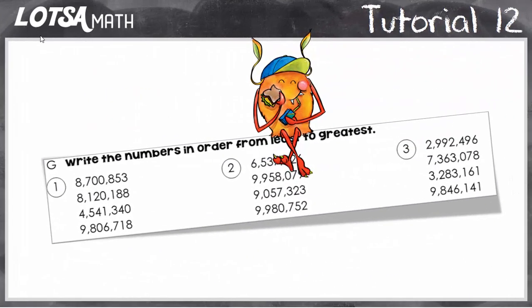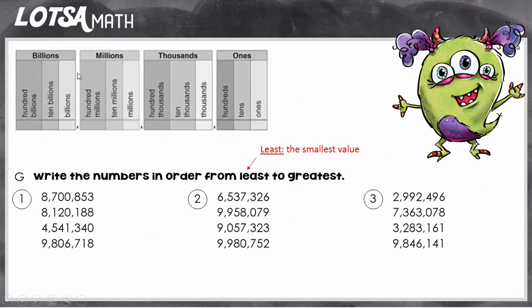For these problems, you're going to write the numbers in order from least to greatest. When you write the numbers in order, least is the smallest value and greatest is the largest value. When you're solving these types of problems, be really careful that you pay attention to whether it's least to greatest or greatest to least. In this case, we're going to be doing least to greatest. So let's look at some examples.